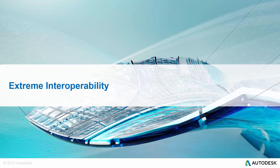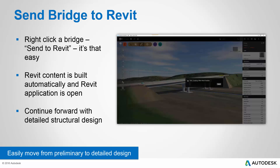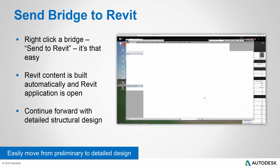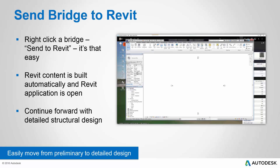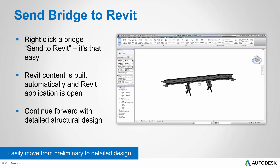Now we'll cover extreme interoperability. For example, you can simply right-click a bridge in InfraWorks 360 — one that was created with the bridge design tools — and select the Send to Revit option. InfraWorks 360 will automatically process that bridge information, create Revit families and other content that it needs, and send that information to Revit. It'll even open the Revit application for you.